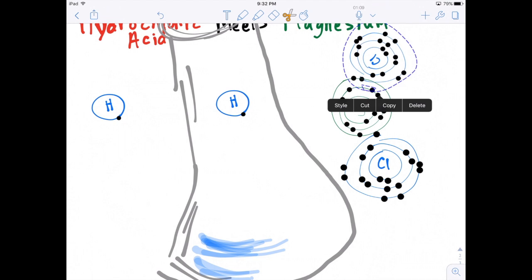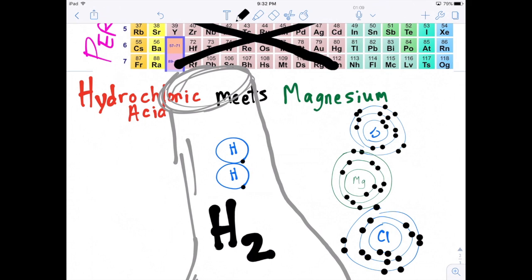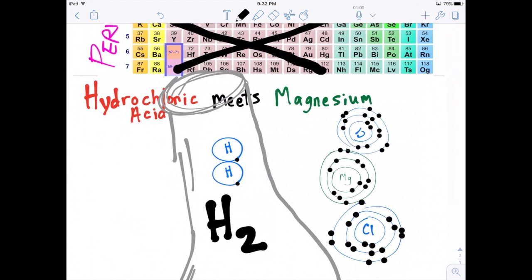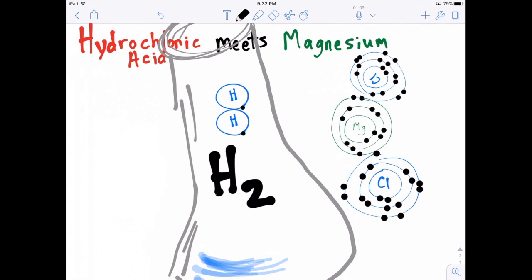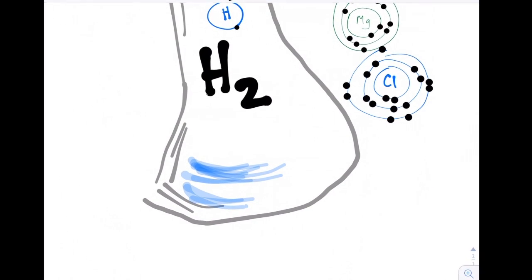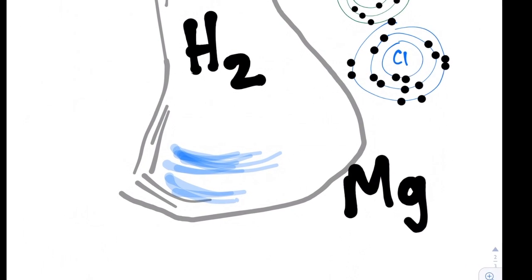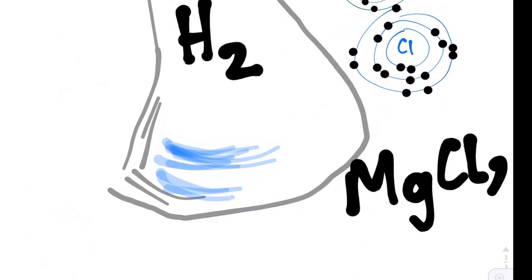So chlorine will feel like it has a full outer shell. What happens to the hydrogen? Those spare hydrogen atoms bond and form H2, and that is a gas that goes out of the top of the flask. And the magnesium forms a kind of salt called magnesium chloride, MgCl2.